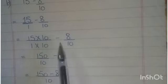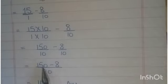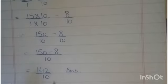Aur jo denominator ke saath students multiply karwa rahe hai digit, aapne wohi same digit aapne numerator ko multiply karwana hai. Clear? Next: 15 multiply by 10 equals 150, and 1 multiply by 10 equals 10. Minus 8 by 10, you write as it is.